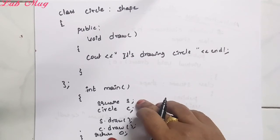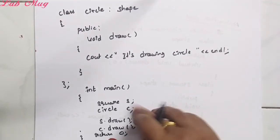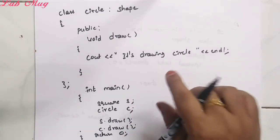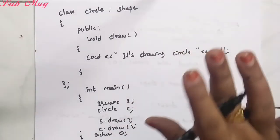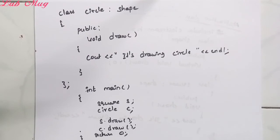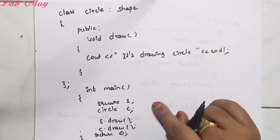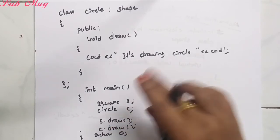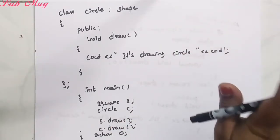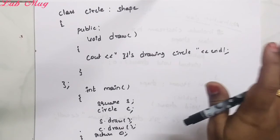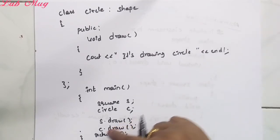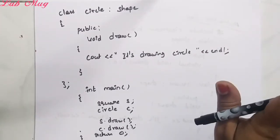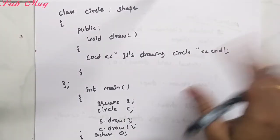Return type int, return 0. Square ki s ane object create chesanu, Circle ki c ane object create chesanu. S ane object to only Square members access avuthai, c ane object to Circle members access avuthai. s.draw() - Square lo unna draw function access avuthi, 'drawing square' print avuthi. c.draw() - Circle lo unna draw function access avuthi, 'drawing circle' print avuthi.